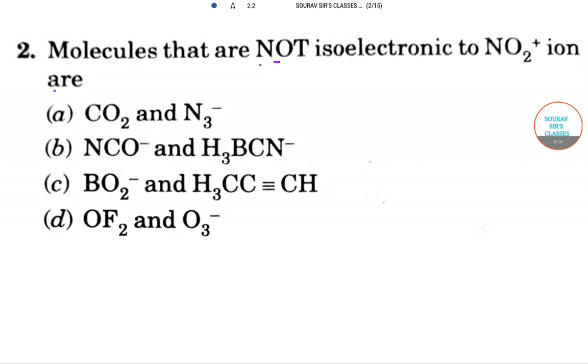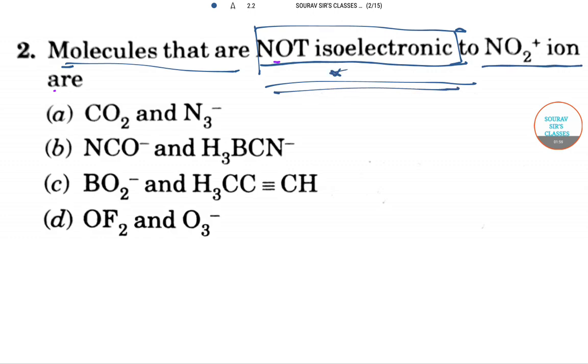Now moving to the next question. Here the question asks about non-isoelectronic molecules. We should first know what is isoelectronic. Before that, I just want to repeat myself - what we have actually asked here: the molecules that are NOT isoelectronic to NO2+ ion.